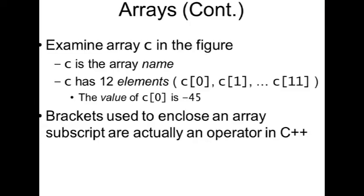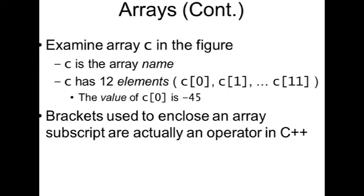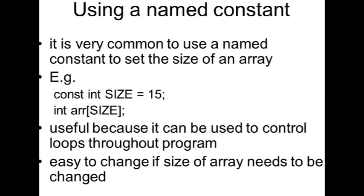The brackets denote the index or subscript. The first index is zero, the last index is n minus 1. You can use a constant for the size, like size equals 50, then declare int array of size. Another way is to use a loop control with a constant.